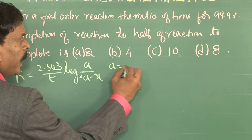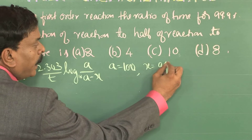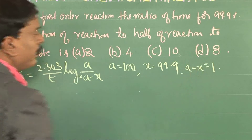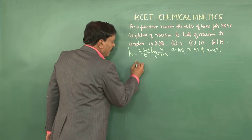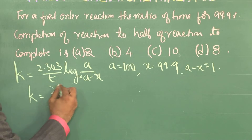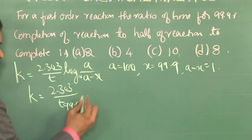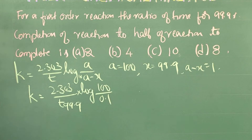If we take A as 100, then X is equal to 99.9 and A minus X is equal to 0.1. Substituting these values: K = 2.303 / T₉₉.₉ × log(100 / 0.1). Log of 100/0.1 is log 1000, and log 1000 is 3.